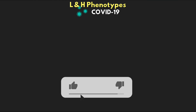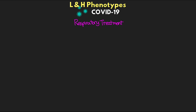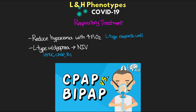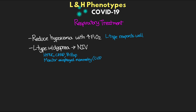Regarding respiratory treatment: first and foremost, reduce hypoxemia with increased FiO2 — L-type patients respond well to this, especially when not dyspneic. If L-type patients are dyspneic, they suggest non-invasive ventilation options such as high-flow nasal cannula, CPAP, or BiPAP. They recommend monitoring esophageal manometry, or watching for pressure swings in CVP and excessive inspiratory effort. They also recommend monitoring airway occlusion pressure. High PEEP may decrease pleural pressure swings and could help prevent lung injury, though this may impact hemodynamics in patients with normal lung compliance.